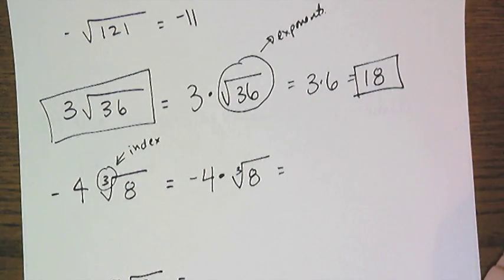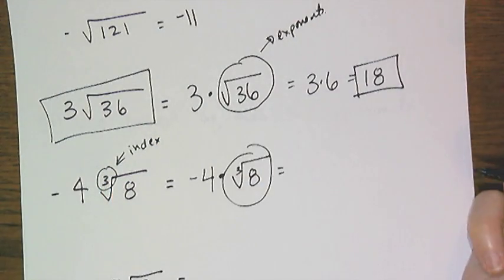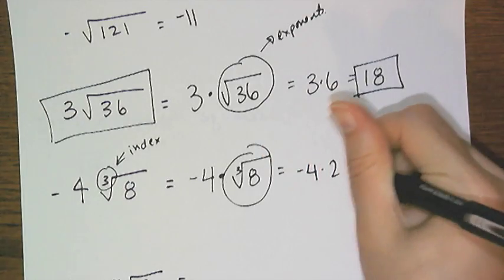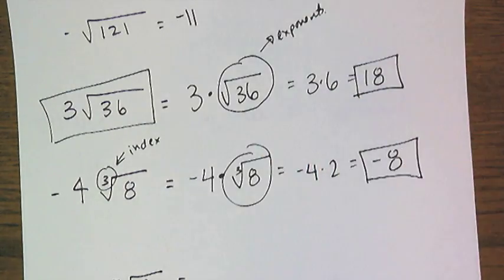So once again, follow the order of operations, take care of exponents first. Cube root of 8 is 2, so it's negative 4 times 2, which is negative 8.